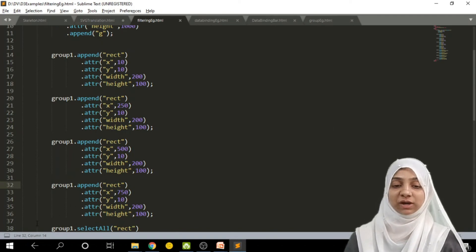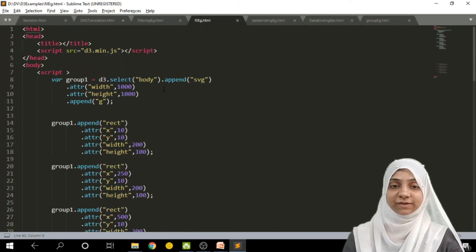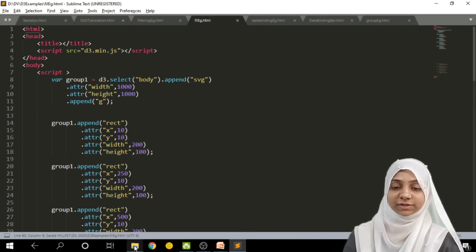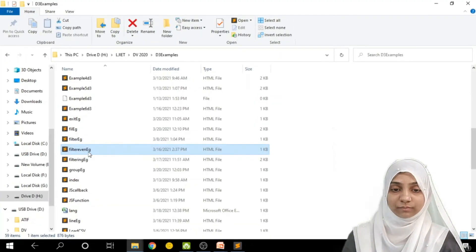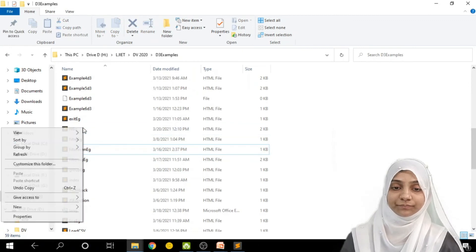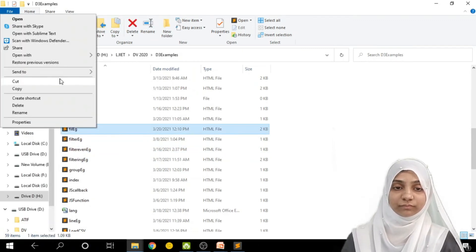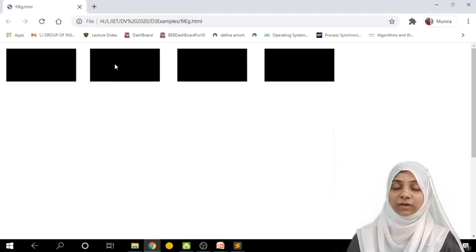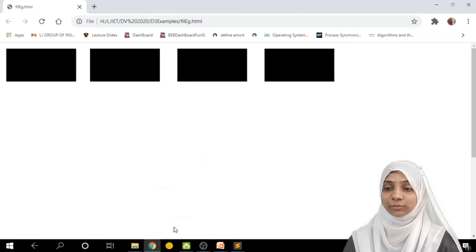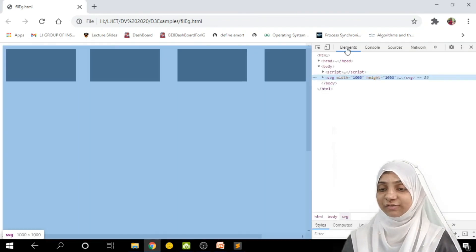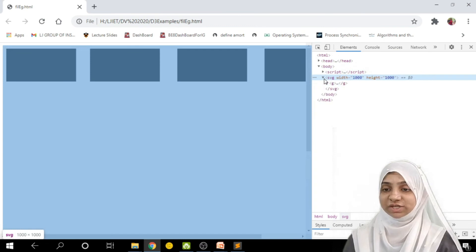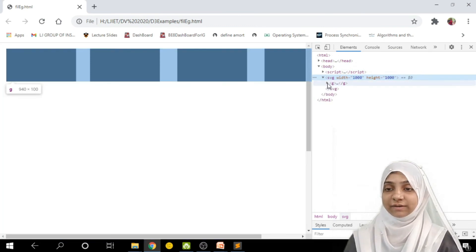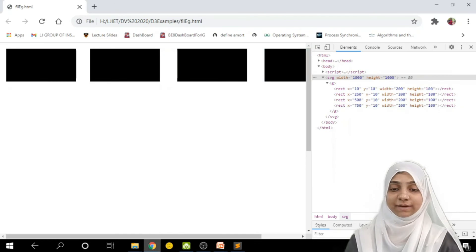Now, I will show you how this particular page looks like. Saving this document and tuning it on a browser. Here, as you can see, there are four rectangles that are getting added within a group. By looking into inspect element window, this is in SVG, and within G, there are four rectangles that are getting added.